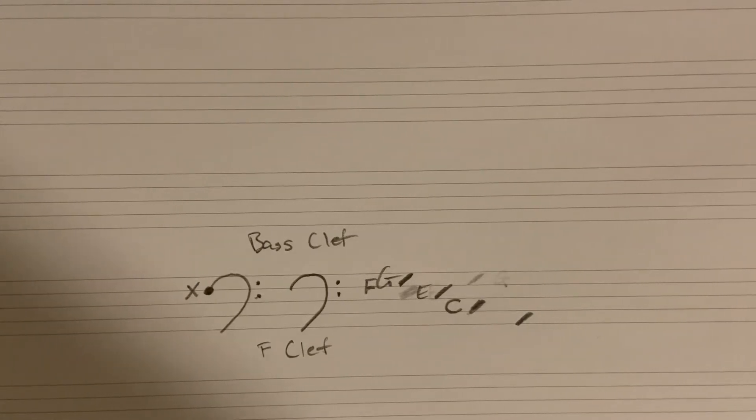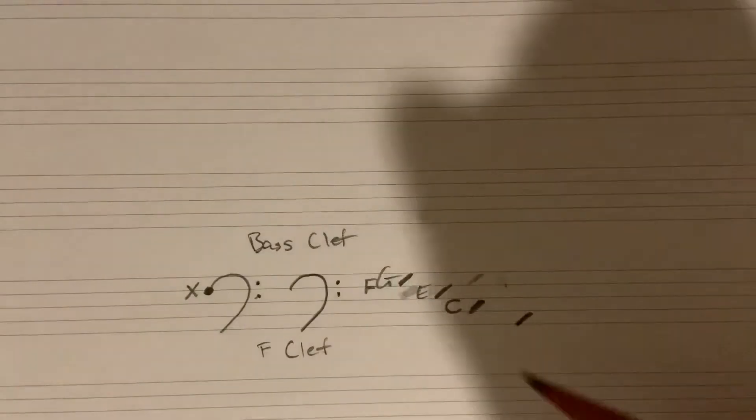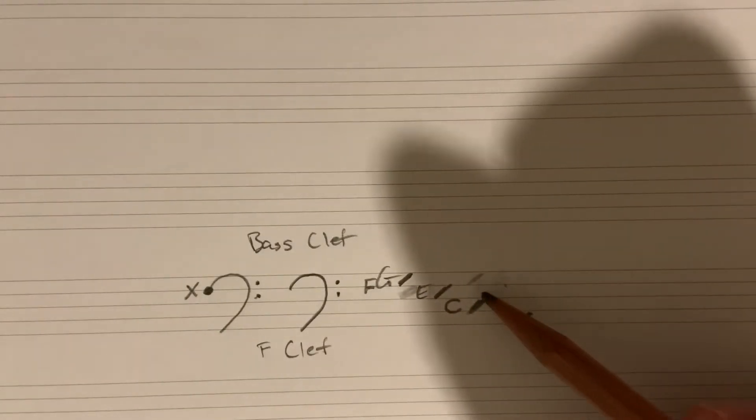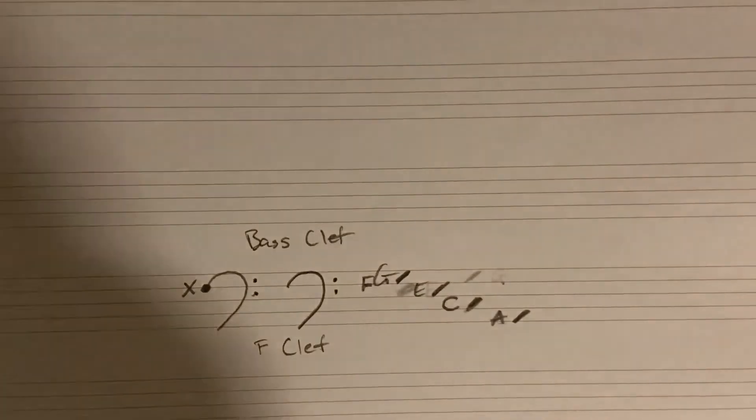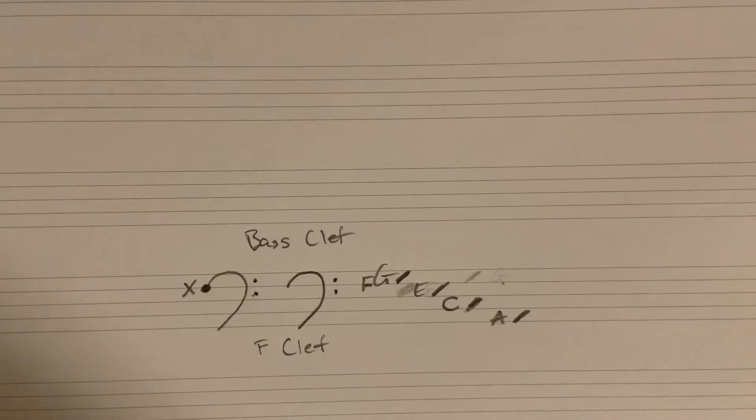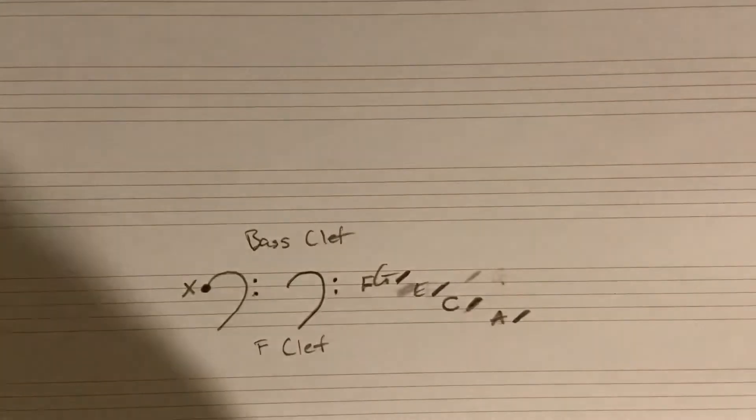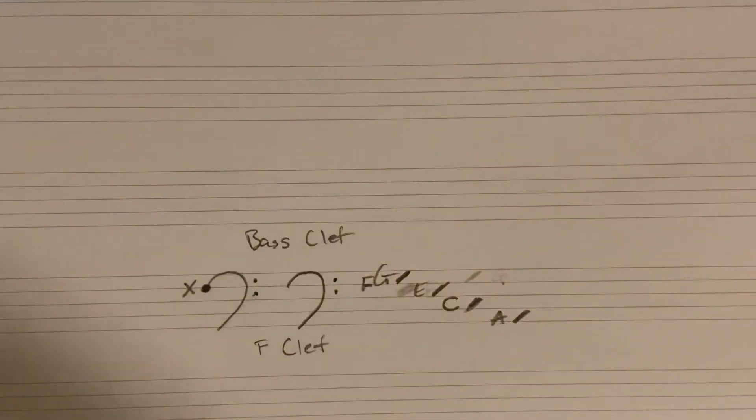And then last but not least, we have this very bottom space here. See if you can figure that one out. Remember, we can do the same thing here like we did with treble clef because everything moves by step. So you can count down, you can count the line in between, and hopefully you come up with A. Now, if you're totally lost in this, you're not quite sure what I'm doing, I want to show you how I came to this response.